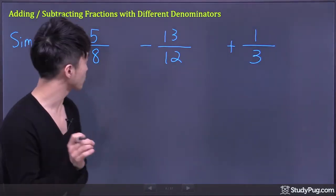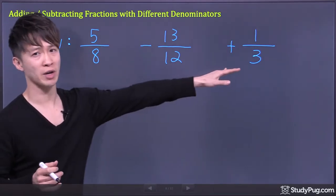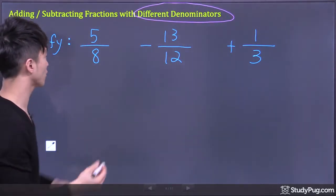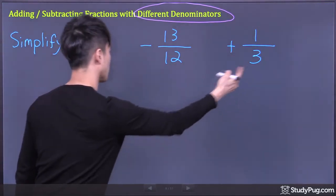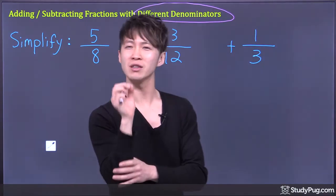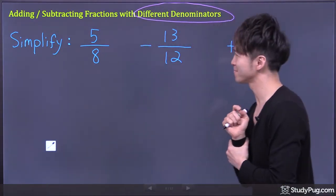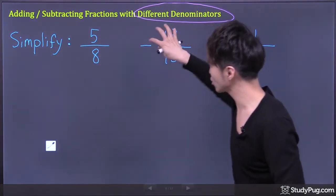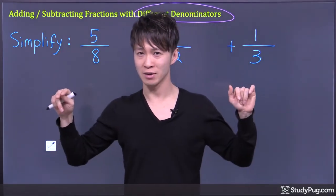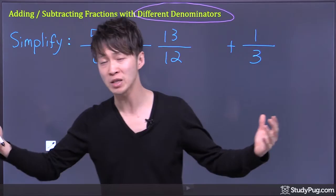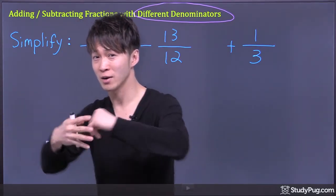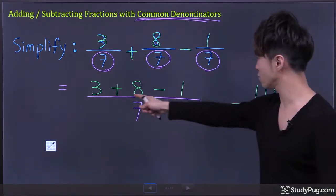Now, to add and subtract fractions with different denominators — for example, in this question we have three different denominators: eight, twelve, and three. The first thing we have to do is convert each fraction to the common denominator, because once we have a common denominator, we can combine all the fractions together, like what we did for the previous question.